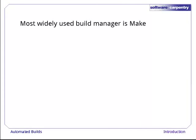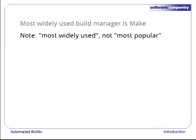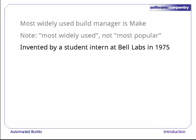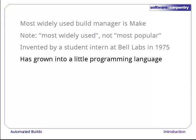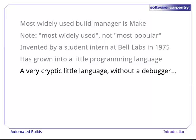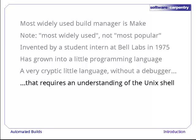The most widely used build manager on Unix and its derivatives is called Make — and note that we said most widely used, not most popular. Make was invented by a summer intern at Bell Labs in 1975. He went on to become a vice president at IBM, which shows you how far a good program can take you. Over 35 years, Make has grown into a little programming language — a very cryptic little language without a debugger, whose conventions and rules only make sense if you understand the Unix shell.